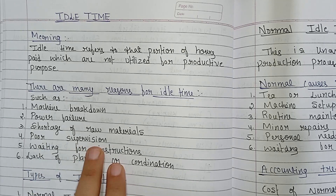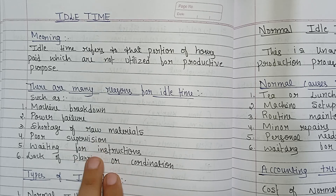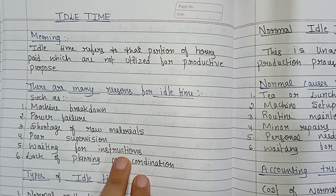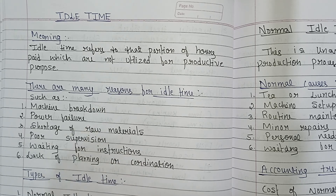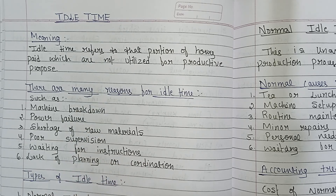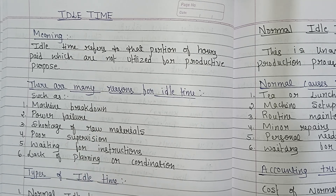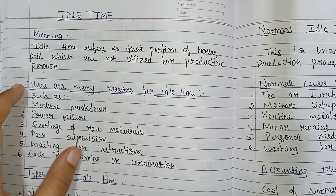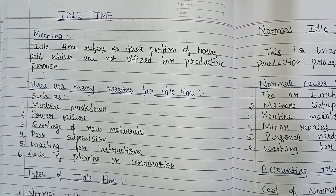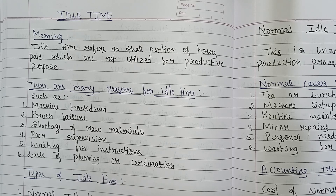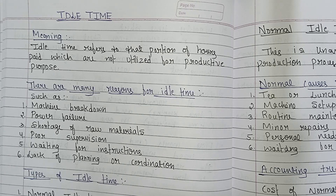Other causes include poor supervision — meaning lack of proper monitoring and guidance — and waiting for instructions, where workers stay idle when they don't receive timely work orders. Finally, lack of planning or coordination, where idle time occurs when activities are not properly scheduled. So the causes are: machine breakdown, power failure, shortage of raw materials, poor supervision, waiting for instructions, and lack of planning.